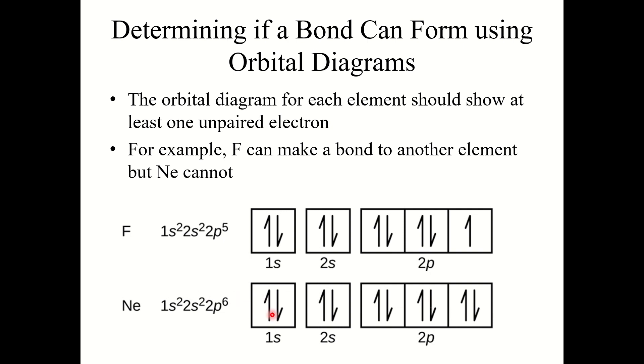Neon, however, cannot. Neon is a noble gas. Its orbital diagram is completely filled up. This is generally why noble gases are so unreactive, is because their orbital diagrams are filled, and so they don't really have any way to make a bond with another element.